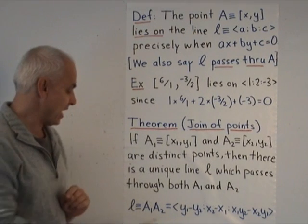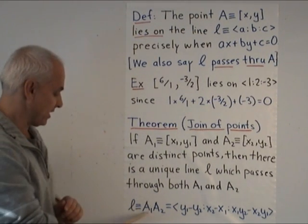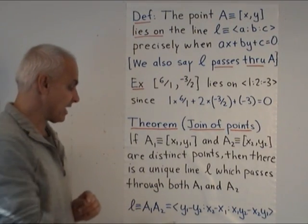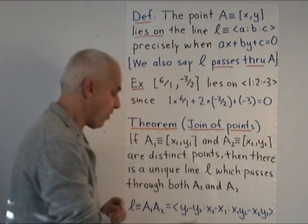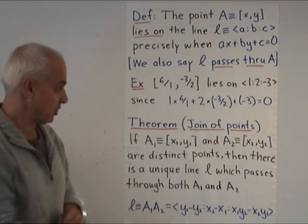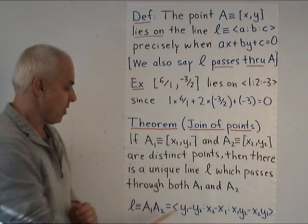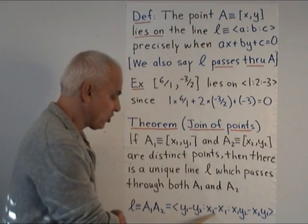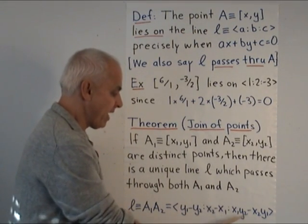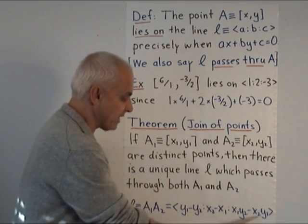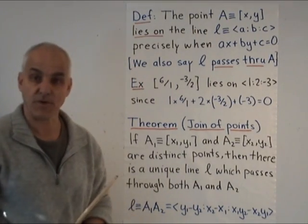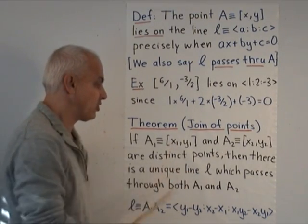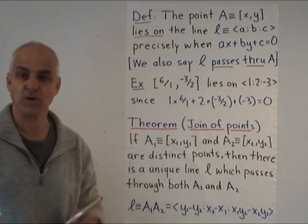And furthermore, this line l, which is called the join of a1, a2 and written a1, a2, just like multiplication, that line is given explicitly by the following formula in terms of the coordinates of the two points. y1 minus y2 is the first coefficient, x2 minus x1 is the second one, and then the combination x1, y2 minus x2, y1 is the third. So that's the line that passes through a1, a2, and the theorem saying that that's the only one that does that.